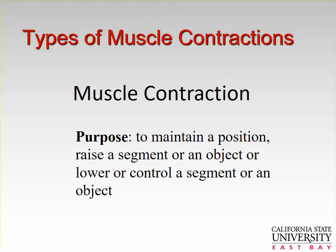Types of muscle contractions. Before we get into the types, let's talk about the purpose of muscle contraction: to maintain a position, to raise a segment or an object, or to lower or control the motion of a segment or an object.